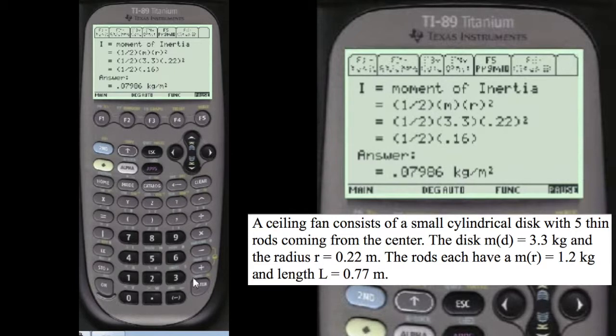The third question is, what is the moment of inertia of the whole ceiling fan? Well, you have to take what each rod moment of inertia is, which is five of them. So you multiply that times five. And then add the moment of inertia of the disc, 0.07986. So you get 0.228.